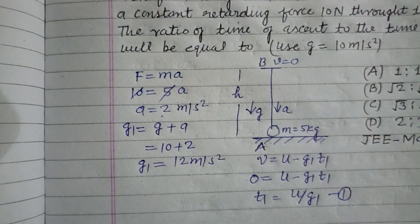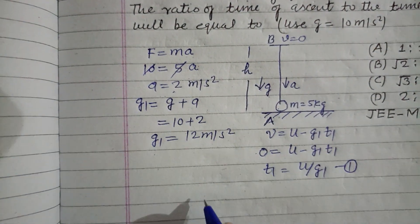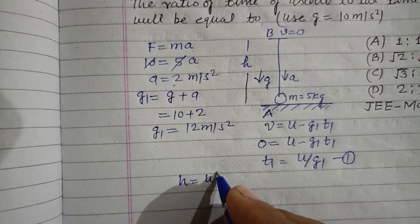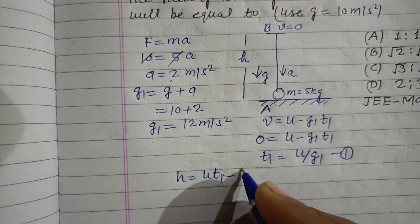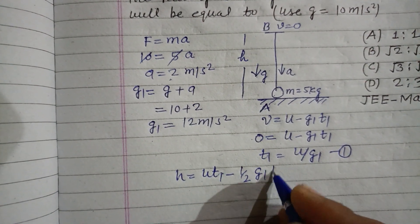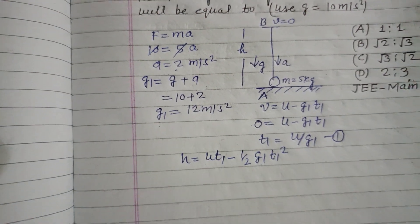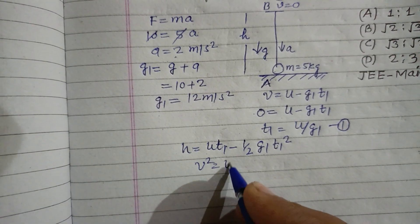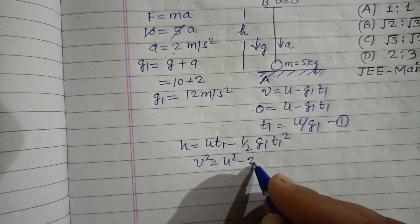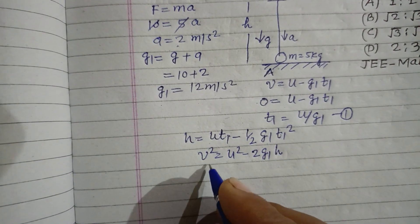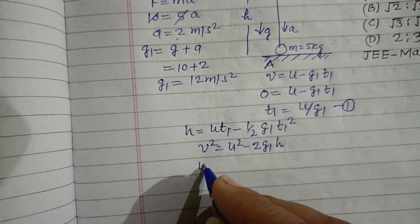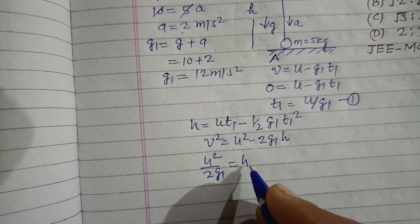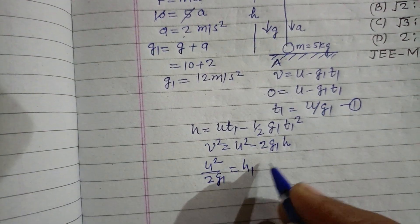Now height attained by this particle is h equals u times t1 minus half g1 times t1 squared. Or we use v squared equals u squared minus 2 g1 h. From this, v is 0, therefore u squared upon 2 g1 is the height attained by the particle.